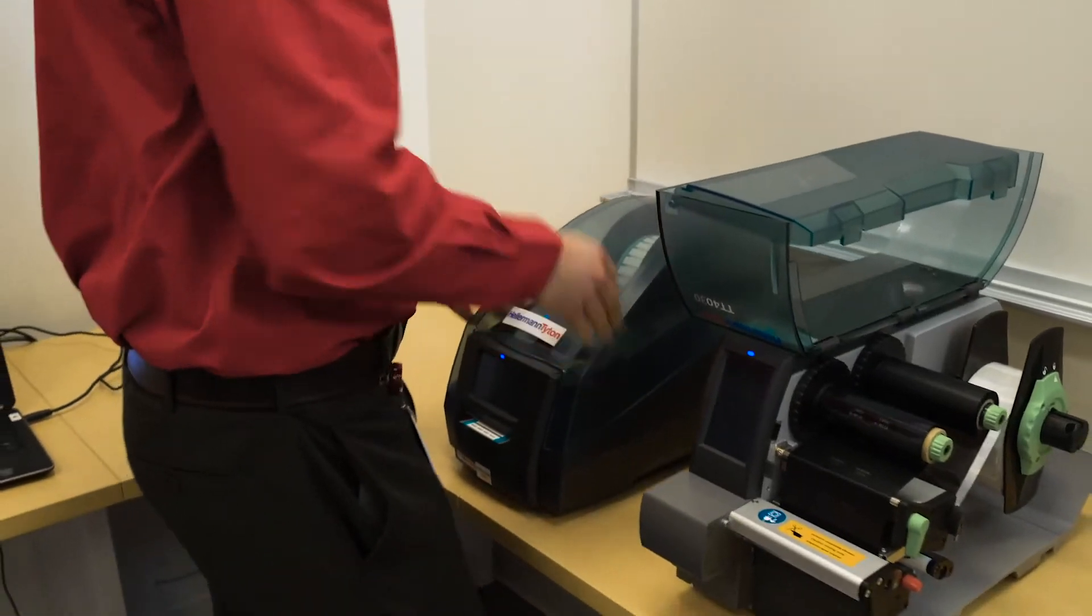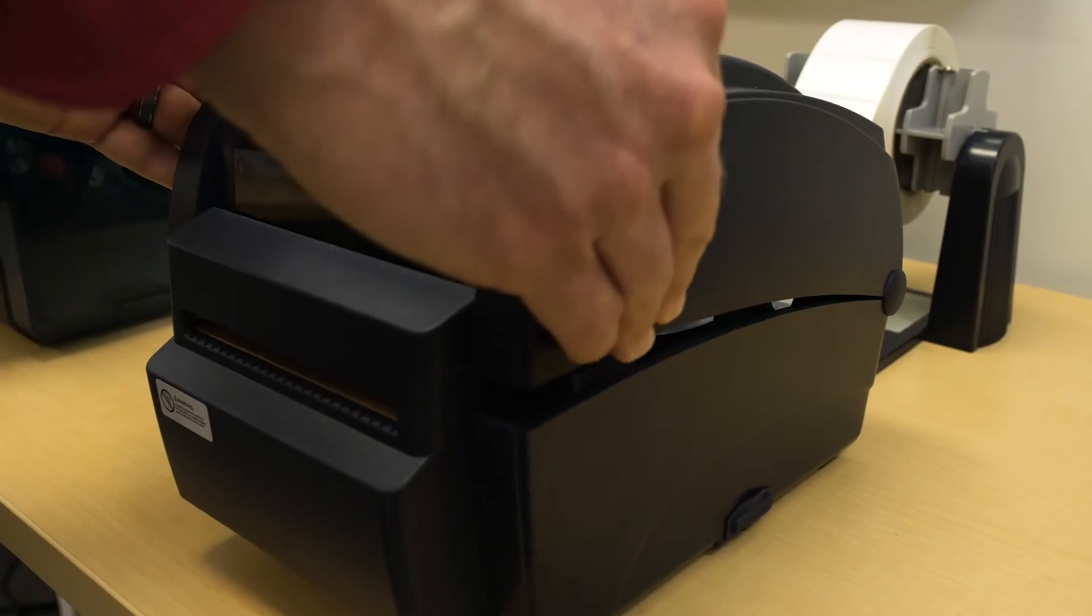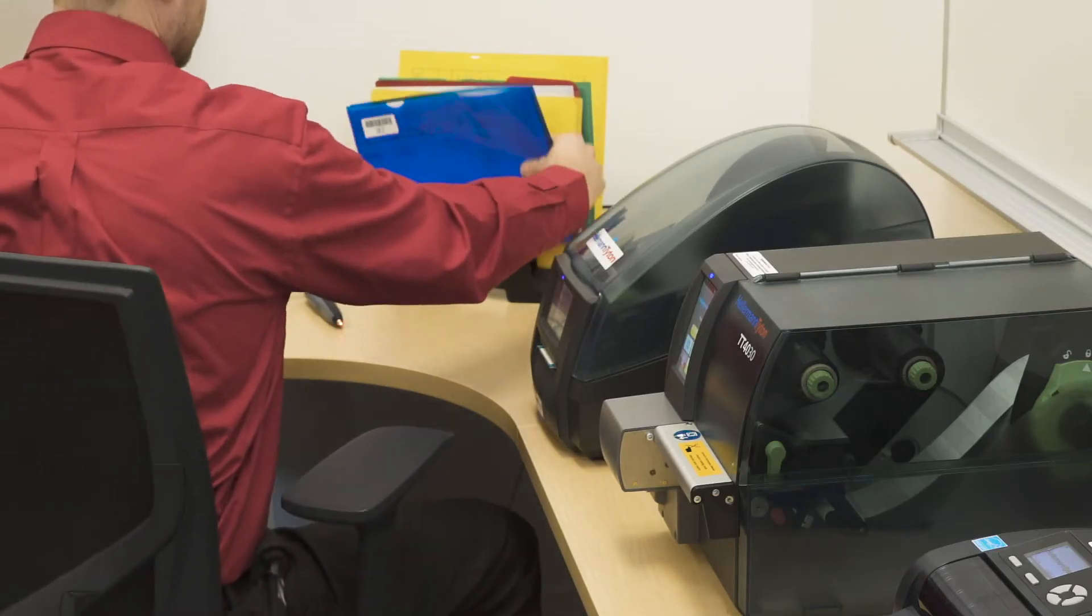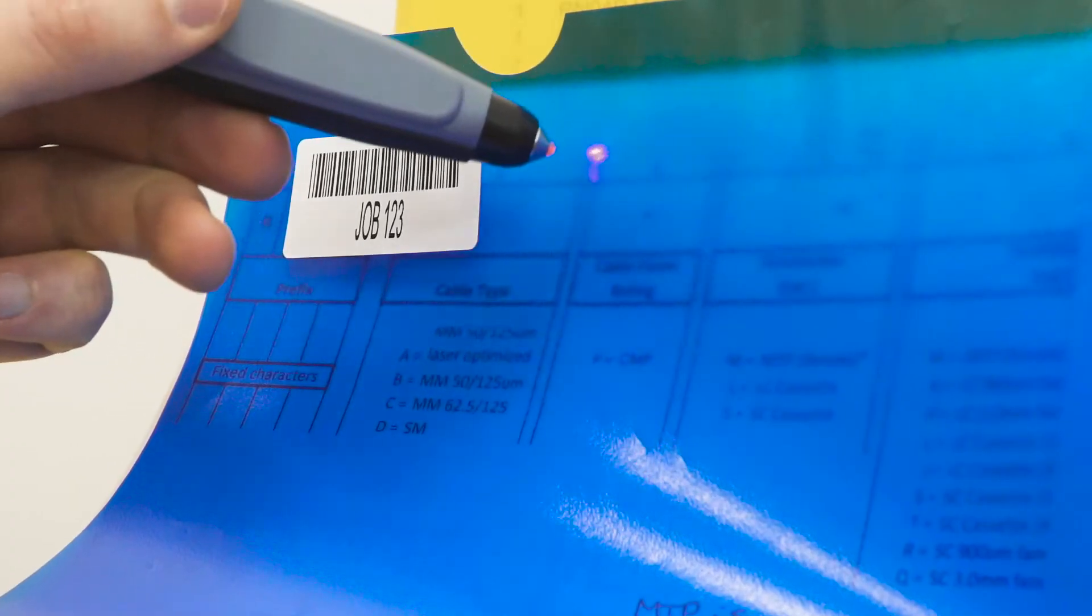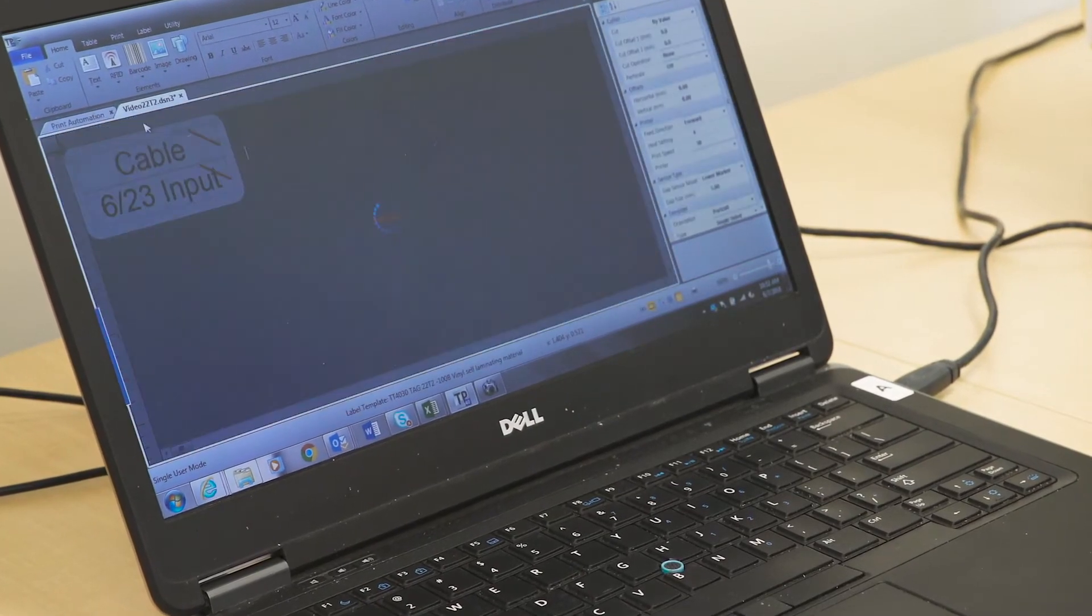Here's where simple happens. If your shop has multiple printers, load them with the necessary label stock for the job. When operators receive a work order, they just scan the barcode. Instantly, the labels print, simultaneously.